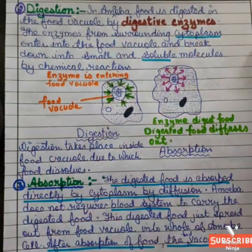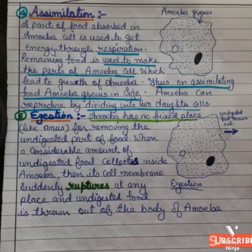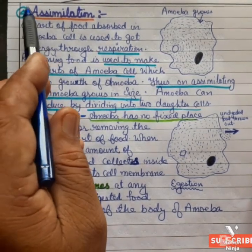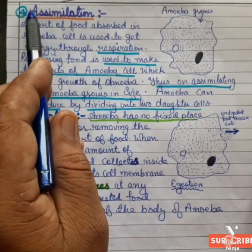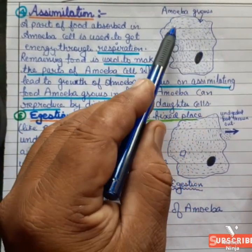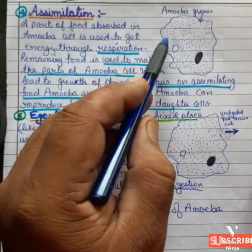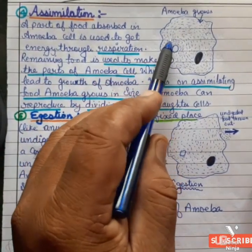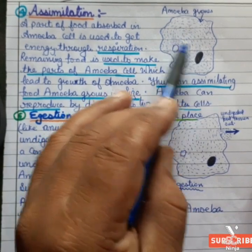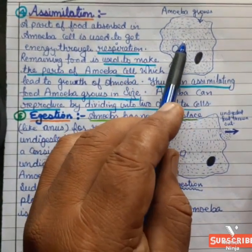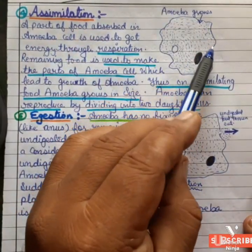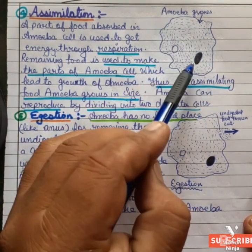After food absorption, the food vacuole disappears. The next step is assimilation. A part of the food absorbed in the amoeba cell is used to get energy through respiration. The remaining food is used to make new parts of the amoeba cell, which leads to growth.